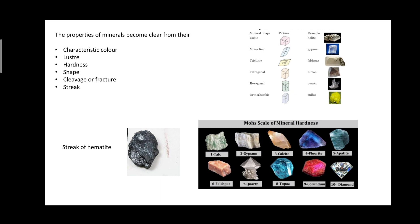Then there is streak. When you rub a sample of mineral on a surface whose hardness is greater than that of the mineral itself, it leaves a fine line of powder on the plate, which is known as the streak plate. The color of the mineral is different from that of the mineral sample itself — the color which you see on the streak plate is the true color of the mineral.